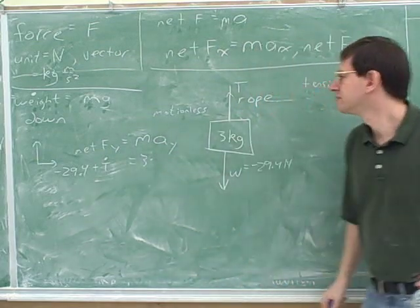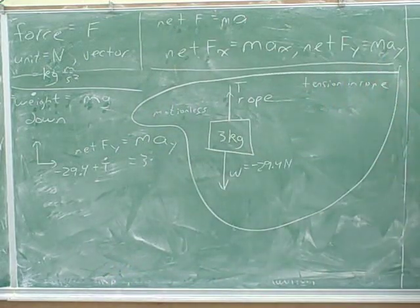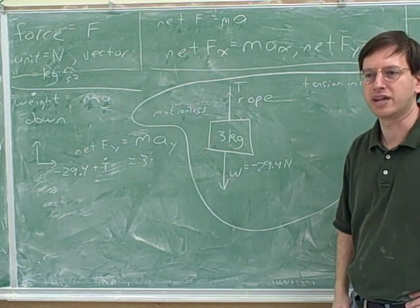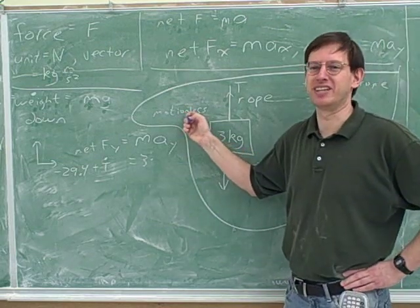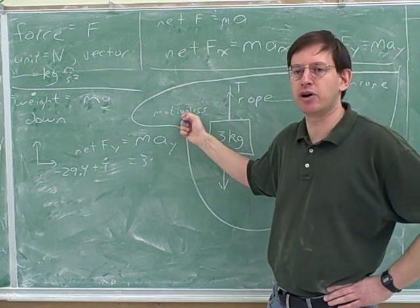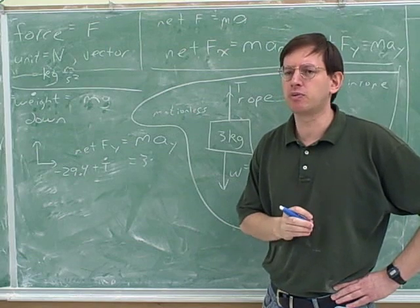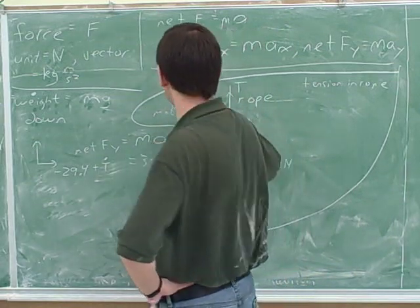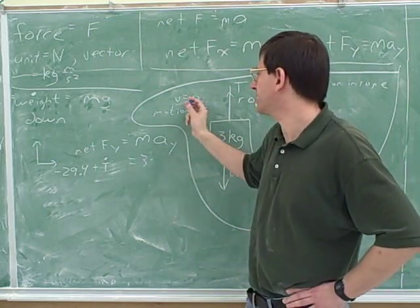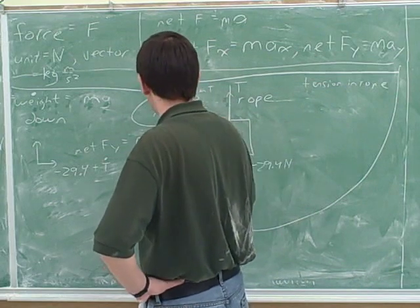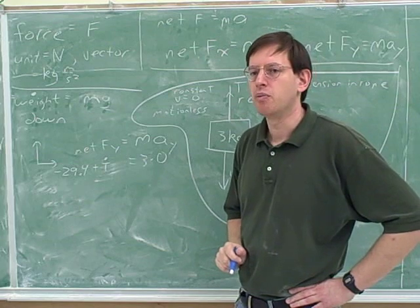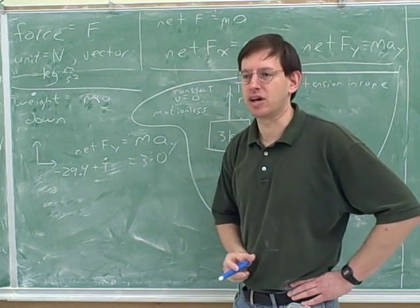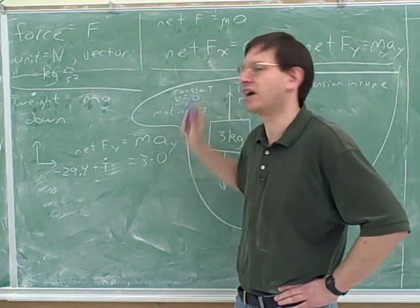We do know what a is in this problem. Because the object is stationary, the acceleration is zero — that's a very important piece of hidden information. If the object is being held motionless, its acceleration is zero. But let's be clearer why: if this is motionless, its velocity is zero, but what's important is whether the velocity is constant or changing. The velocity is constant at zero — that's how we know the acceleration is zero. If the object isn't moving, you know that a is zero because its velocity is constant at zero.